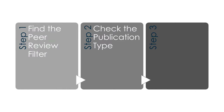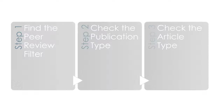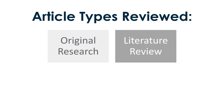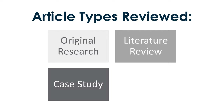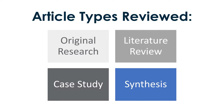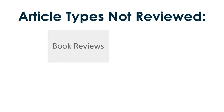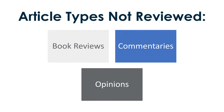Step 3: Check the article type. Not every article in a peer-reviewed journal is peer-reviewed. Reviewed article types include original research, literature reviews, case studies, and synthesis articles. Article types not peer-reviewed include book reviews, commentaries, and opinion articles.